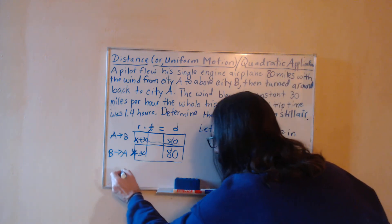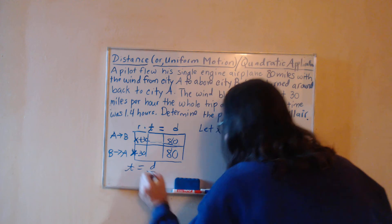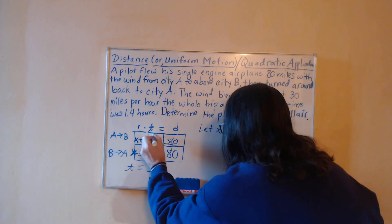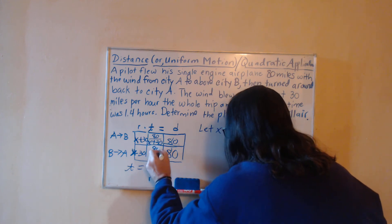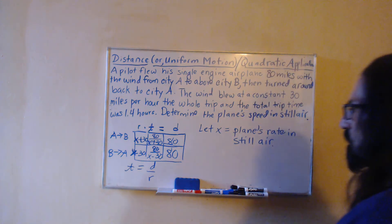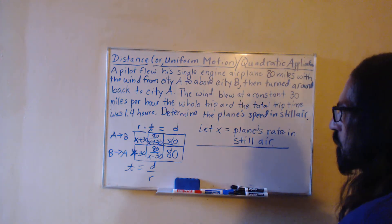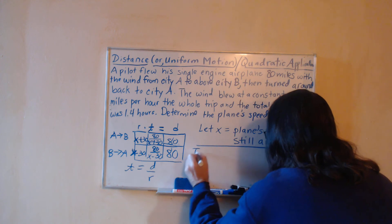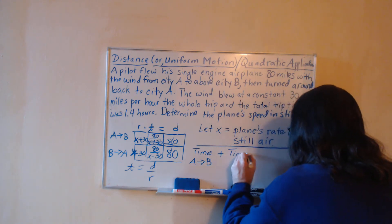Last two things to set up the equation are going to be that we could rewrite the formula, divide both sides by r to get time equals distance over rate. And so the trip out we have a time of 80 over x plus 30, and the trip back we've got a time of 80 over x minus 30, all of x minus 30.